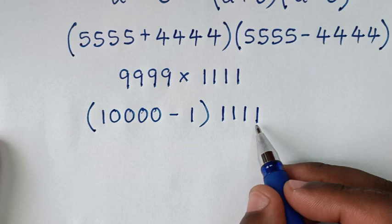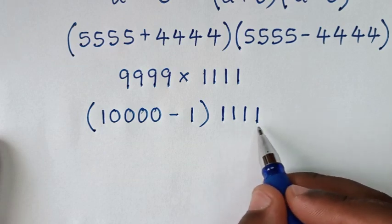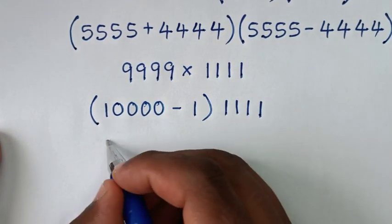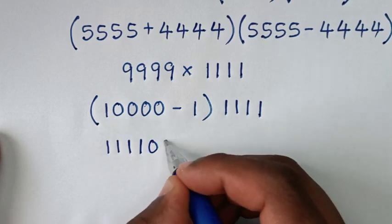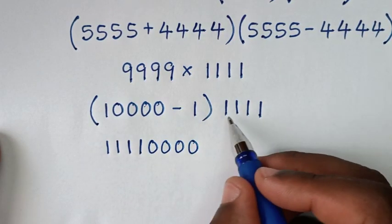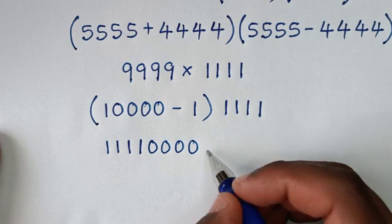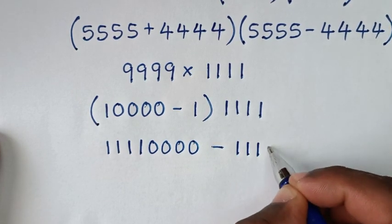Then we'll distribute inside the bracket. 1111 times 10,000 equals 11110000 (that's 1111 with four zeros). Then negative 1 times 1111 equals negative 1111.